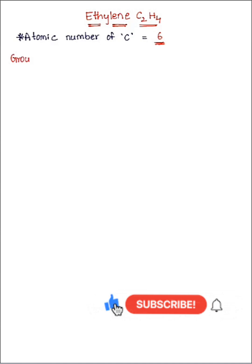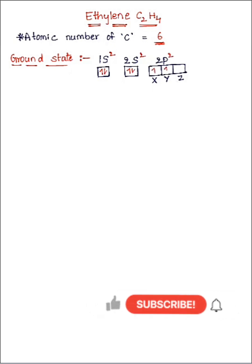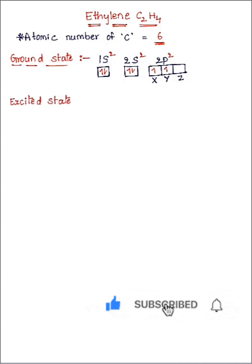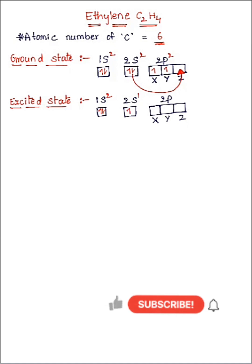We have to consider the carbon atom first in its ground state. In the ground state, 1s has two electrons, 2s has two electrons, and in 2p there is one electron in the x orbital and one electron in the y orbital. In the excited state, one electron from 2s jumps into the z orbital of 2p.